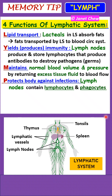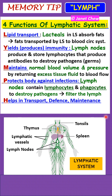P is for protect. The lymphatic system protects the body against infections because lymph nodes contain lymphocytes and phagocytes. Phagocytes carry out phagocytosis, where they engulf and destroy pathogens. In this way, lymph nodes filter the lymph — destroying pathogens — before the lymph flows back into the blood circulatory system.